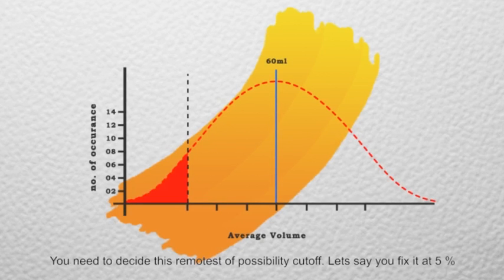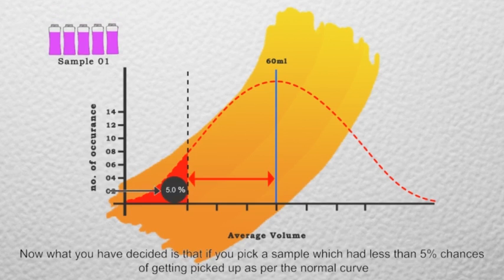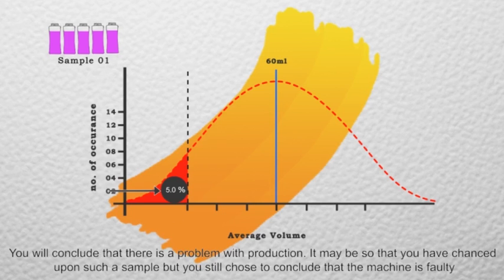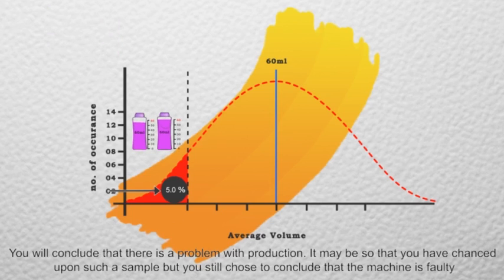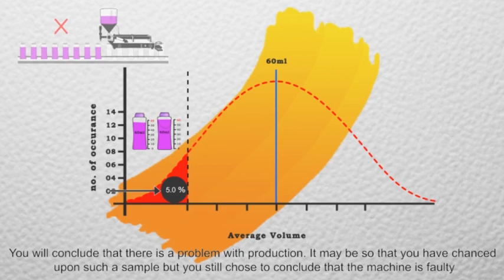You need to decide this remotest of possibility cutoff. Let's say you fix it at 5%. Now, what you have decided is that if you pick a sample which had less than 5% chances of getting picked up as per the normal curve, you will conclude that there is a problem with the production. It may be so that you have chanced upon such a sample, but you still choose to conclude that the machine is faulty.